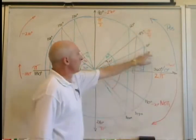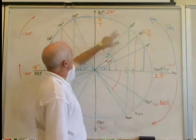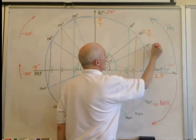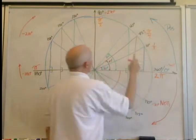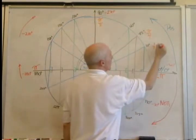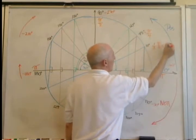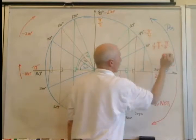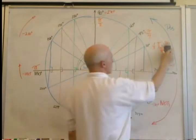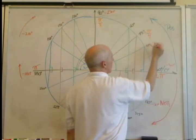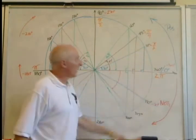Now, 30 degrees. Well, that's one-third of 90 degrees. So, one-third times pi over 2 is equal to pi over 6, and that's what 30 degrees is. So, we'll write that there, equals pi over 6.